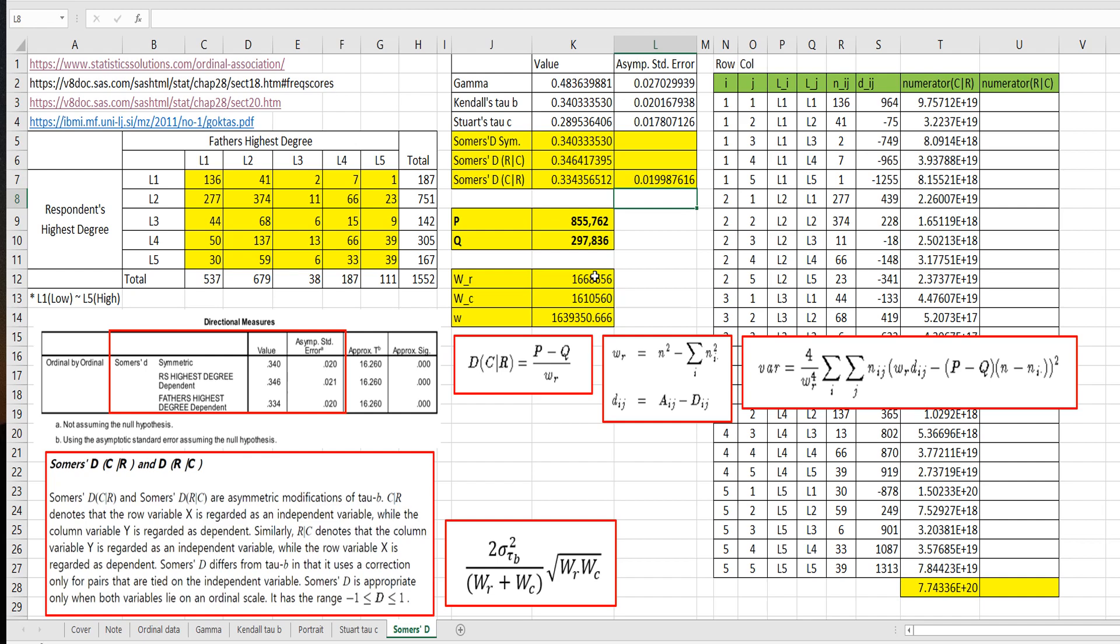All right. And let's calculate this part. Numerator, row given column. Again, I told you that we need to change this one as WC. So let's calculate this part.